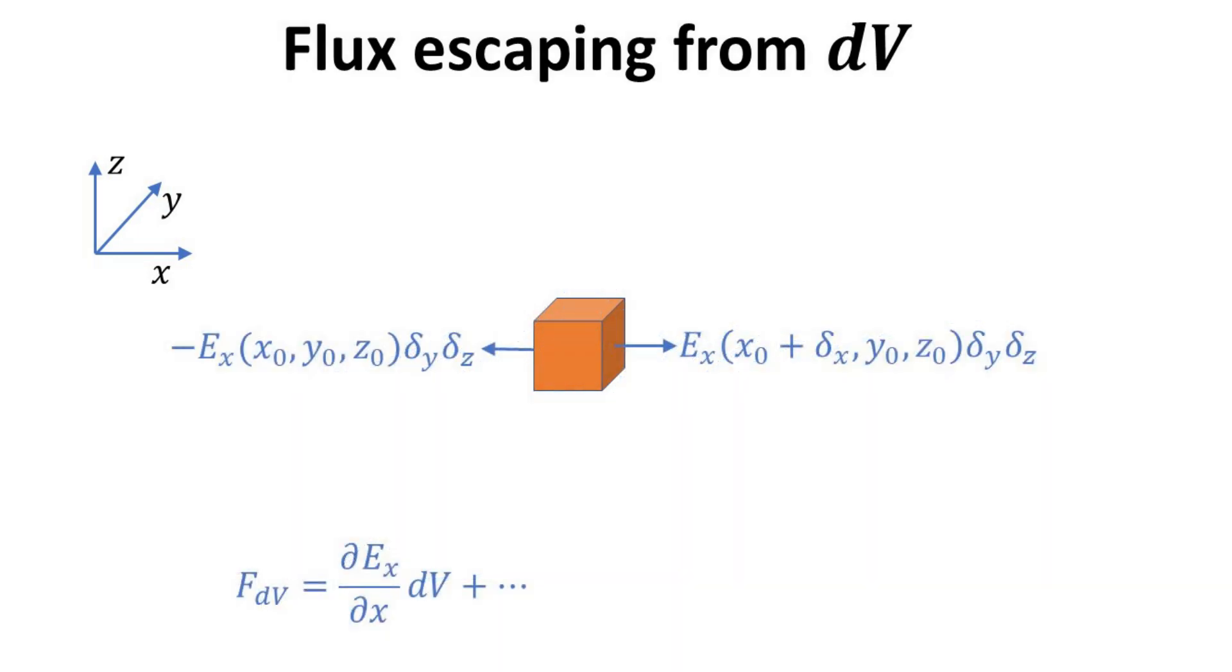First, let's compute the flux escaping from the surfaces pointing along the directions plus minus x. Only the vector component normal to the surfaces would contribute to the flux leakage. Thus, the flux is given by the area, delta y times delta z, multiplied by the field component Ex as shown. Note the negative sign on the left surface, since the surface is pointing in the minus x direction. The sum of these two fluxes is the finite difference approximation to the differential of Ex with respect to x multiplied by the volume.